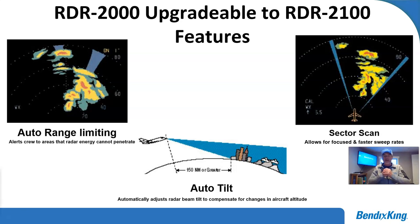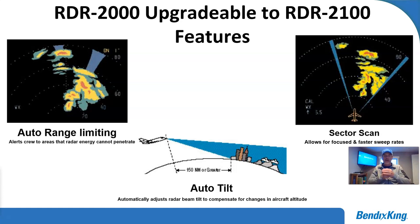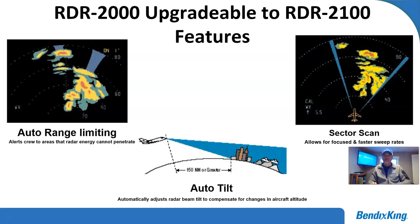Another feature is auto tilt. If you think about radar operation in flight, you're looking at freezing levels and things like that. As you adjust your altitude, your radar tilt has to change or you'll lose sight of that freezing level at the specific range you had it at before. What auto tilt does is, as the aircraft increases in altitude, it actually increases the down angle of the dish. So you'll still have that same freezing level on your screen at the same distance, giving you a good representation so you don't lose track of where you're at with that freezing level.